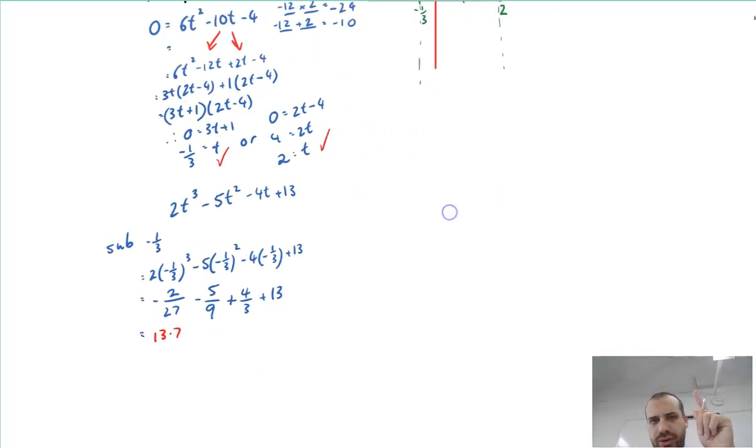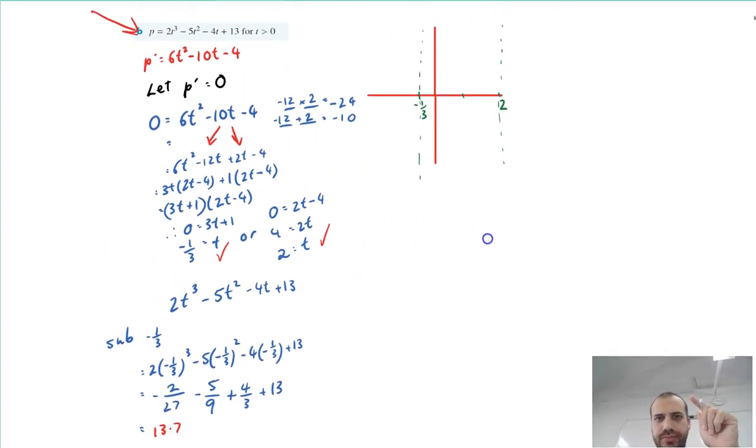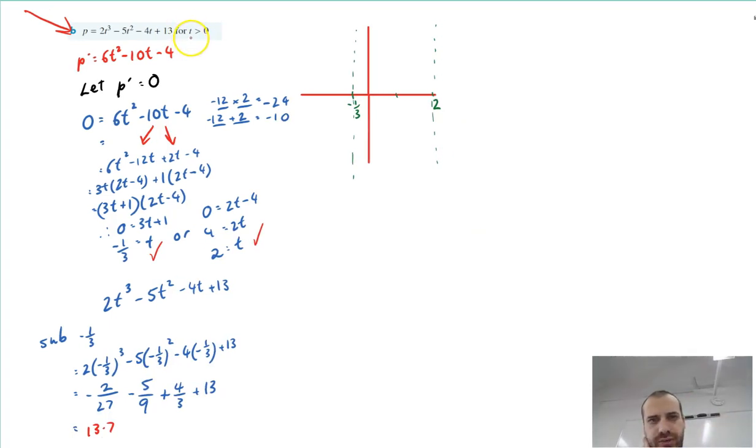It's at this stage that I should note that my question actually said for t is greater than zero. So I should actually be ignoring the negative one third because it says t has to be greater than zero. So the equation only works from there to there. But I'm going to scribble that out because the question is more interesting this way.